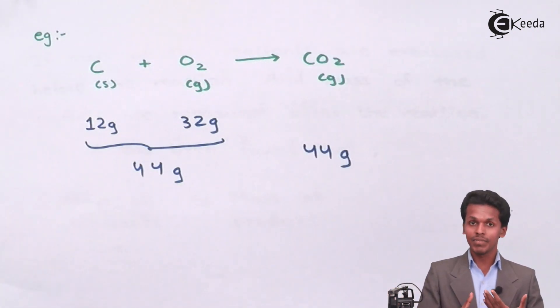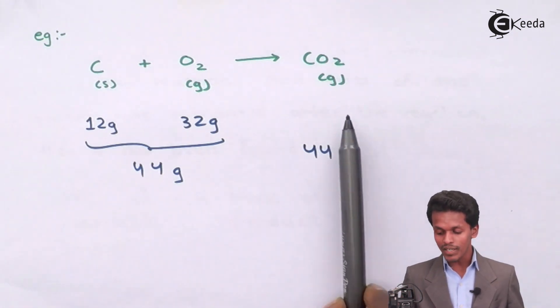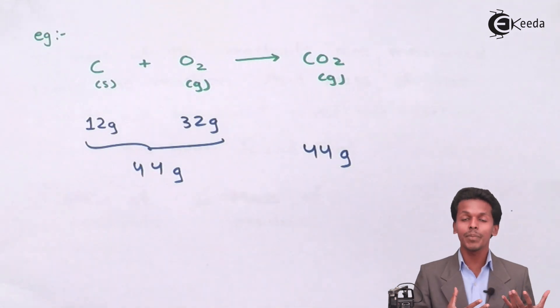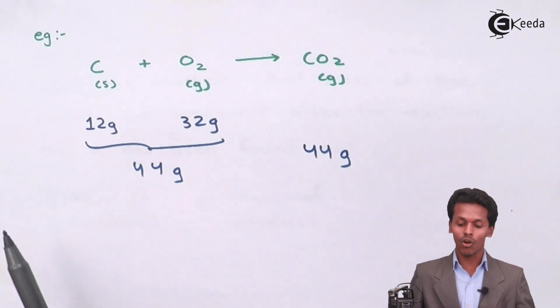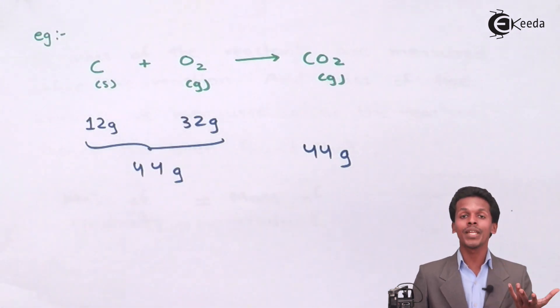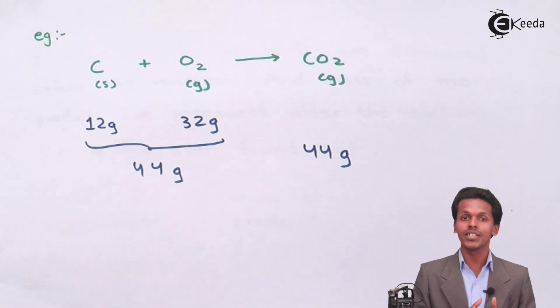Or vice versa - if a particular product is produced, we can estimate what weight or how many moles of the elements were involved. These are the applications of the law of conservation of mass.